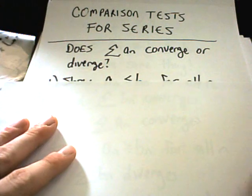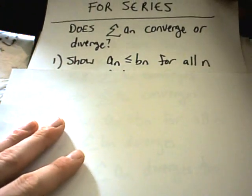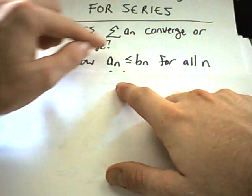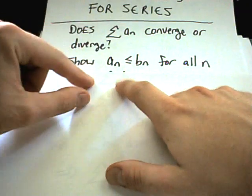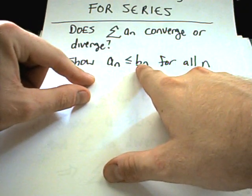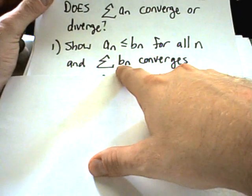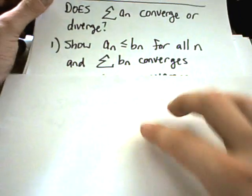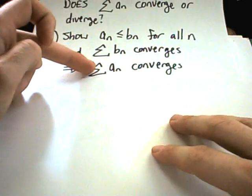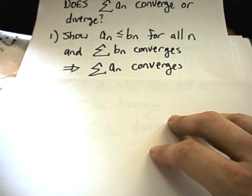The first one, called the direct comparison theorem, is you basically show that each term in this series is smaller than another series. The idea is, if the series with b_n converges, then the original series with a_n also converges.